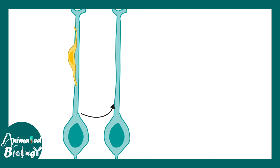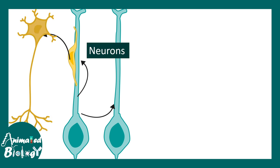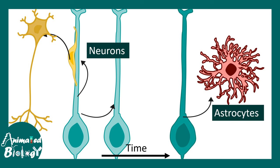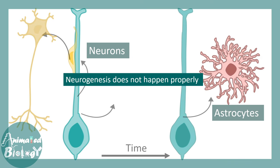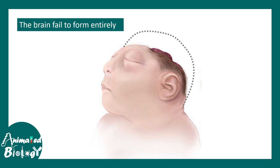Radial glial progenitor cells give rise to one radial glia and can also give rise to a newborn neuron. Down the timeline they also give rise to astrocytes. All these neurogenic and gliogenic processes are abrogated when folate is deficient, because nucleotide synthesis is insufficient to support cell division. In order for a cell to divide, DNA must be replicated first, requiring enough nucleotides — which is not possible when folate is deficient. This is why folate deficiency leads to neural tube defects like anencephaly.